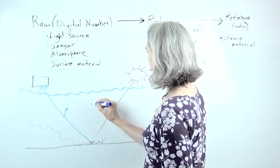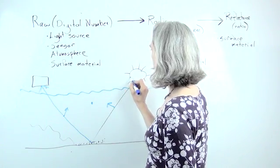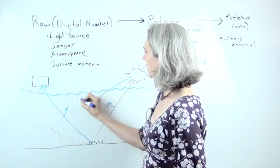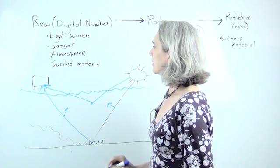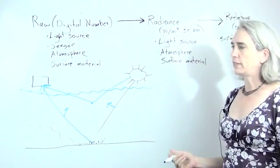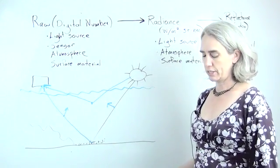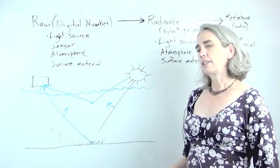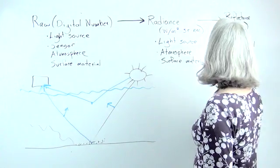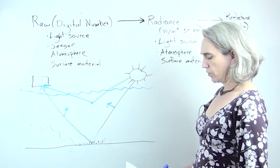And likewise, you can have some particles in the atmosphere that the sun hits and then it shines them into the sensor, so it looks like it's coming from the surface, but it actually didn't even interact with the surface, so it's nothing to do with it. So these are all the kinds of things that we're trying to correct out when we do a correction to reflectance and atmospheric correction.